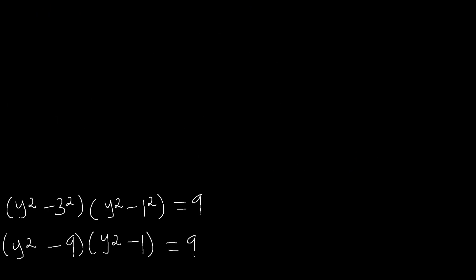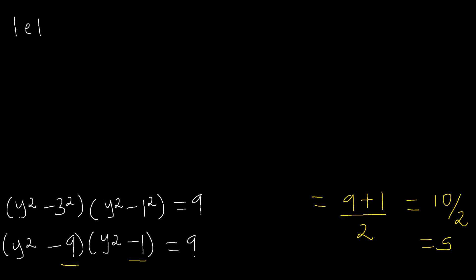And once again, we shall take the average of 9 and 1, so this will be equal to 9 plus 1 divided by 2, which gives us 10 divided by 2, which is equal to 5. So what we shall do is let y squared equal to a variable z plus the average, which is 5. And now we shall replace that into this equation.